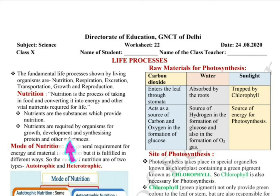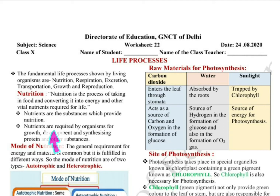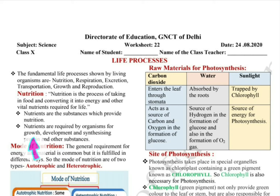Nutrients we get from food, and every food has different components. Some foods provide one type of nutrient in major quantities and another in minor quantities. We also get all the components in one type of food, like milk — that's why milk is given to children. Nutrients are required for growth and development; mainly we need proteins for our body's growth and for our cells.